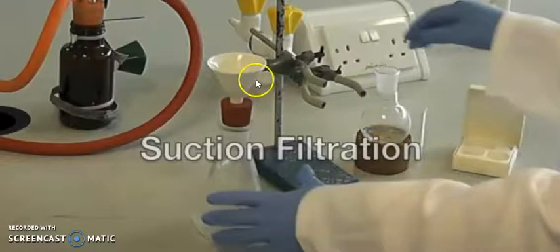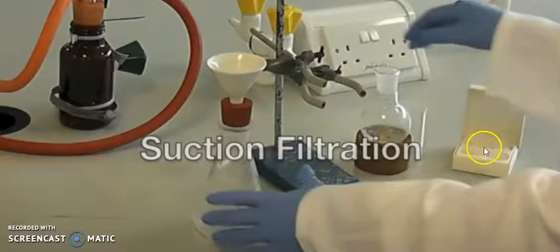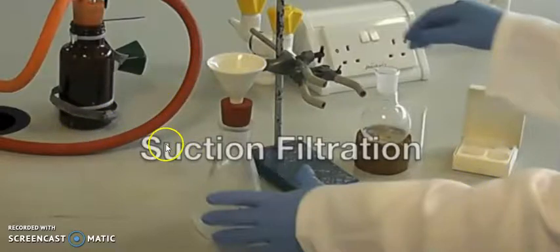You need filter paper according to your Buchner funnel. So this is the filter paper. Then you need pressure. So you make the equipment like this, then you can see how you will do the suction filtrations.